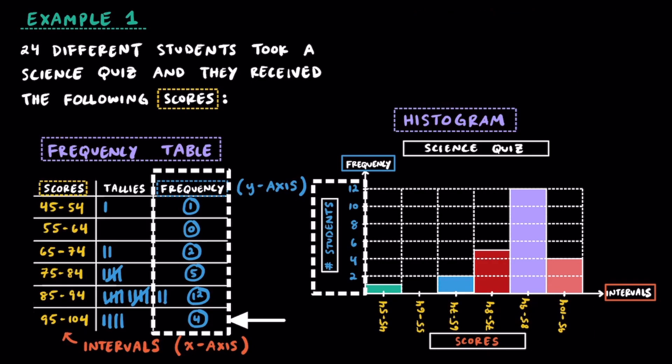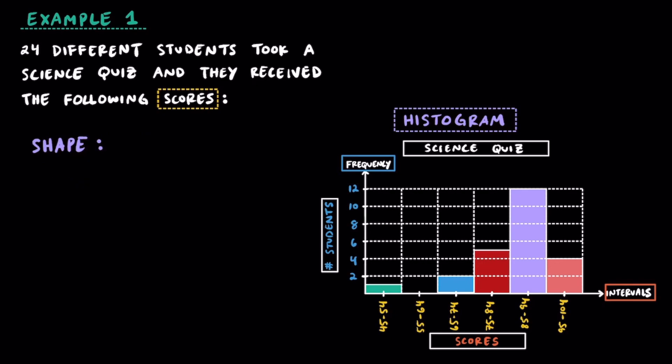Here's where the scores ended up, and here's where the frequencies ended up. Looking at the shape of this distribution, we can see that it is left skewed.